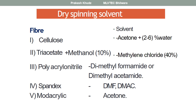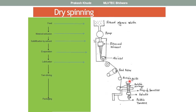Different solvents are used depending on which fiber needs to be produced. For the production of polyacrylonitrile, we require dimethylformamide (DMF). Similarly, for triacetate we need methylene chloride, for spandex DMF is used, and for acrylic fiber acetone is used as the solvent.